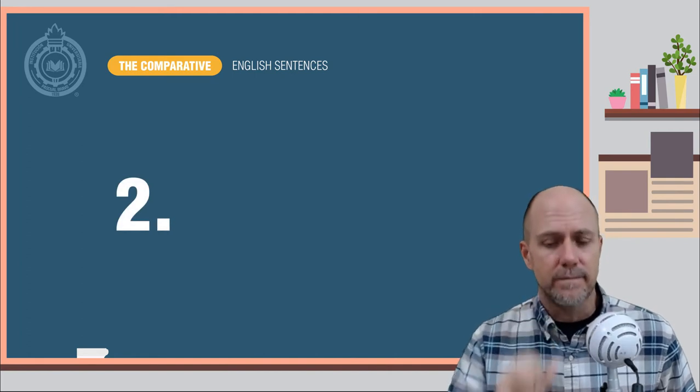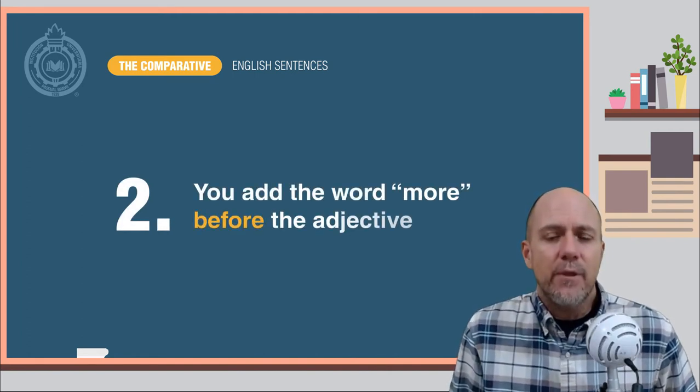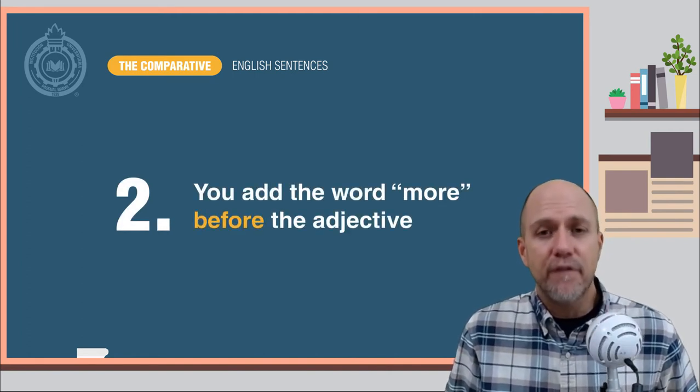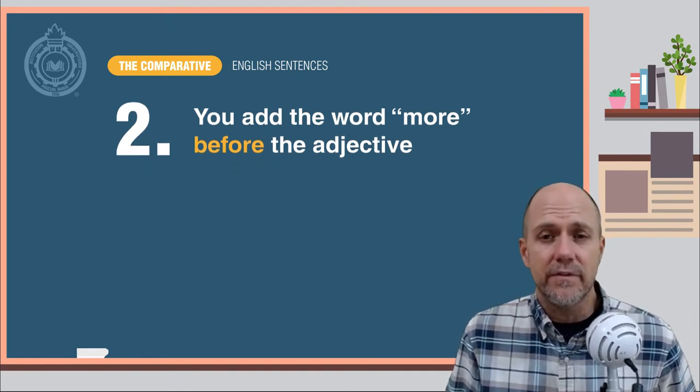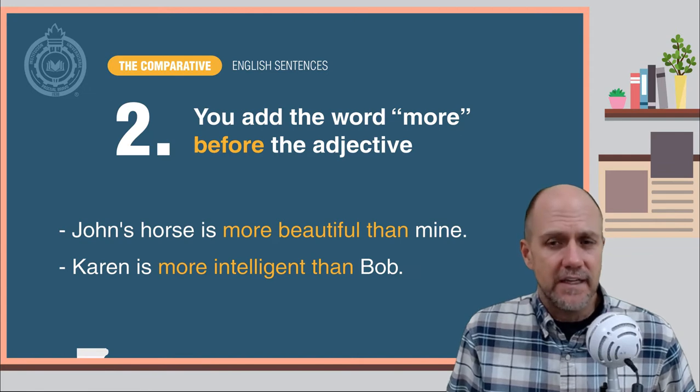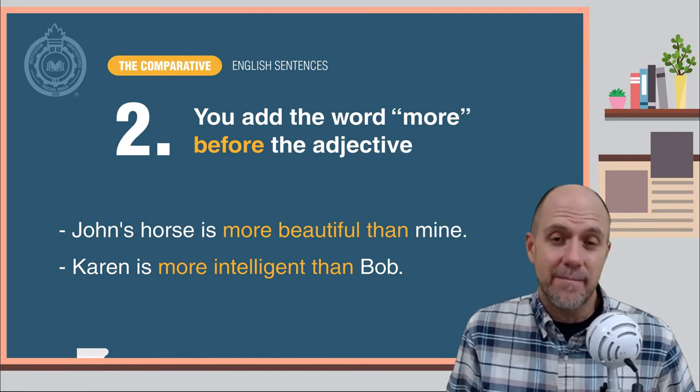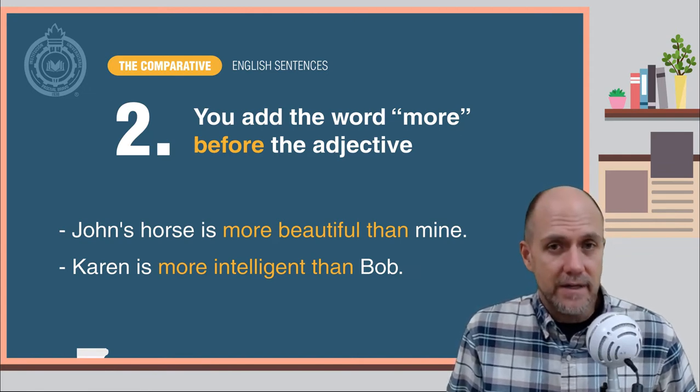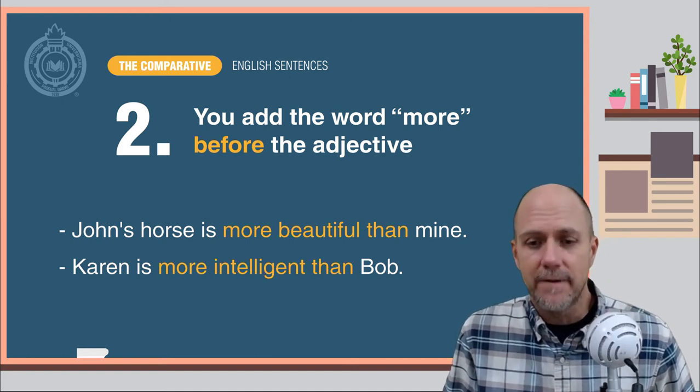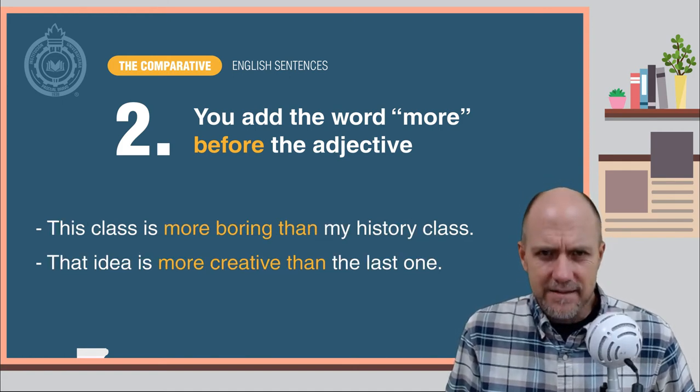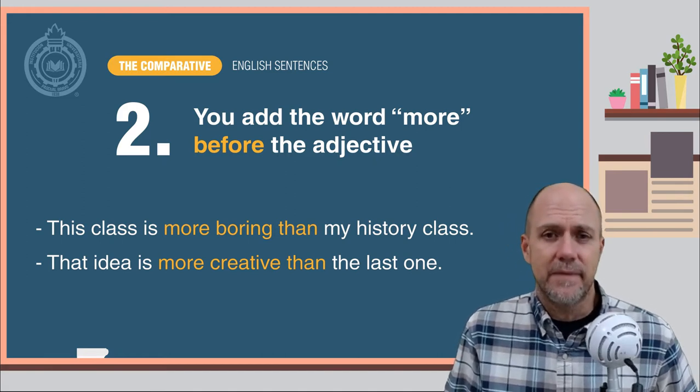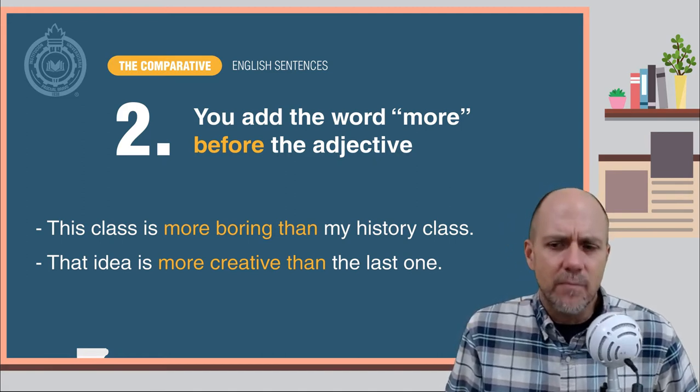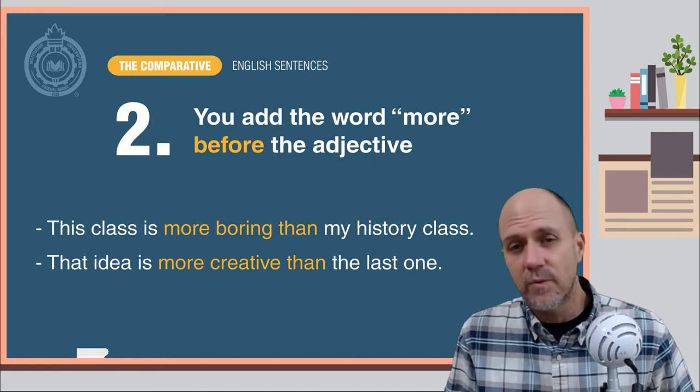Number two: You add the word more before the adjective. Here are some examples: John's horse is more beautiful than mine. Karen is more intelligent than Bob. This class is more boring than my history class. That idea is more creative than the last one.